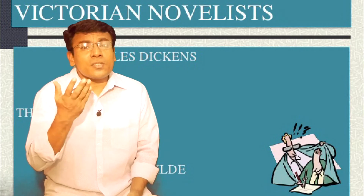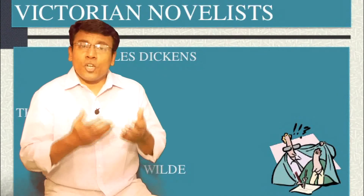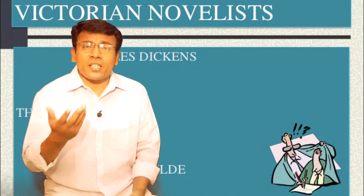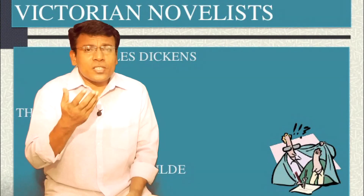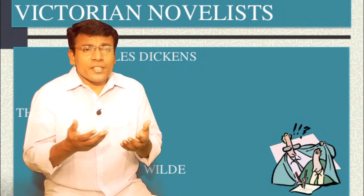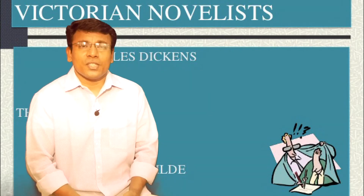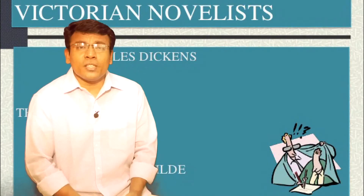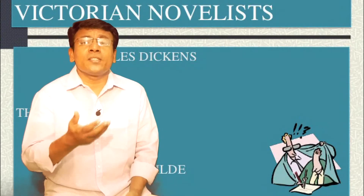We talked about industrialization and its impact on Victorian society, the rise of Oxford and Cambridge universities, and the spread of science and technology. We also had a short discussion on important personalities: Charles Darwin and his theory of evolution, Karl Marx and Marxism, John Stuart Mill and utilitarianism, Sigmund Freud and psychoanalysis, and India and the great British Empire.